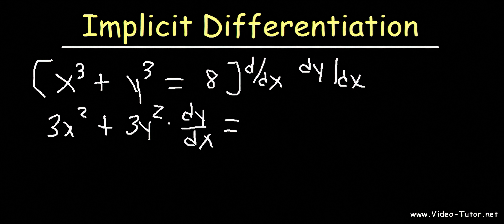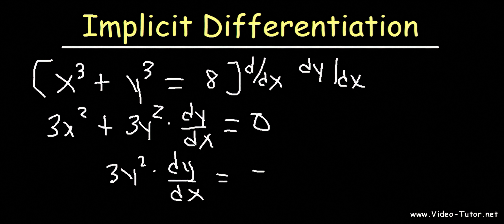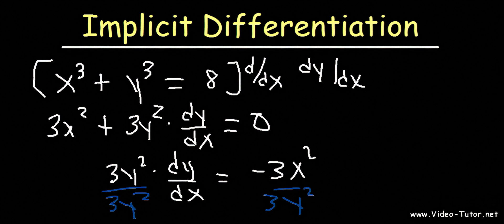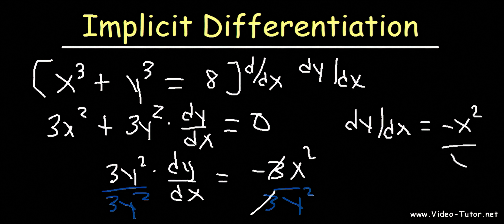The derivative of a constant like 8 is 0. So now we've got to get dy/dx by itself. If we move the 3x squared to the other side, all we've got to do now is divide both sides by 3y squared. And so dy/dx is therefore equal to — the 3s cancel — negative x squared over y squared.